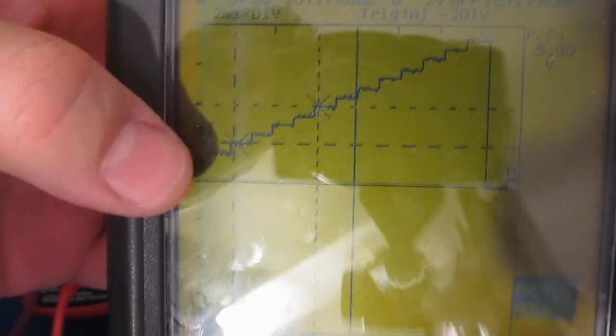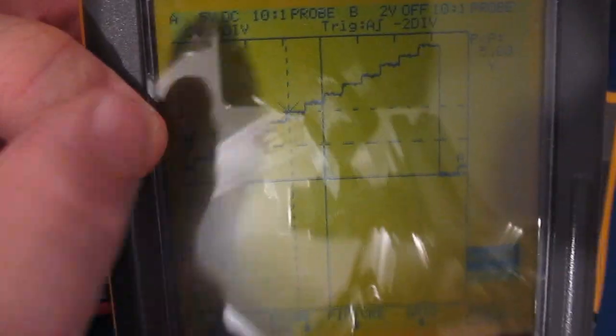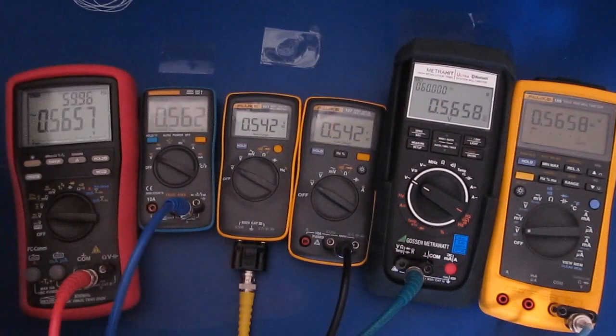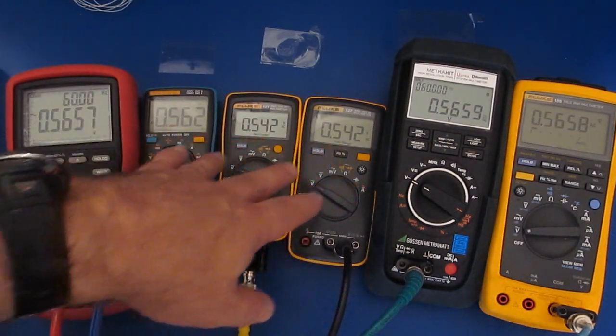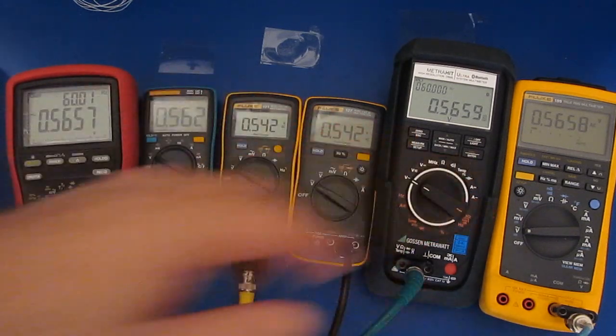This is basically a 4-bit DAC. I'm just ramping up the value and again we can see our two averaging meters are about 20 millivolts lower than the RMS meters.